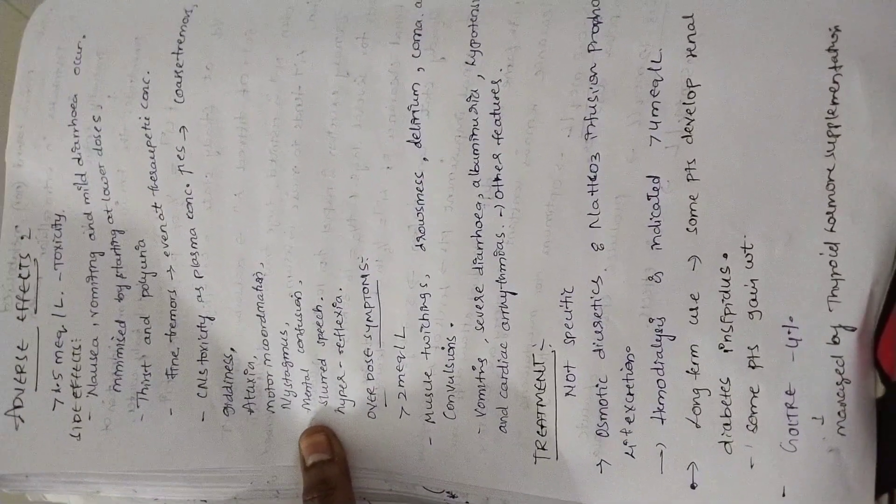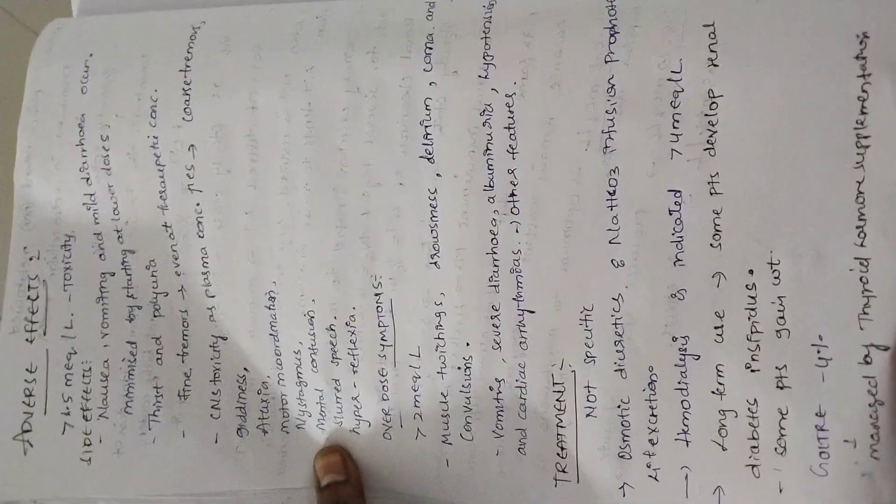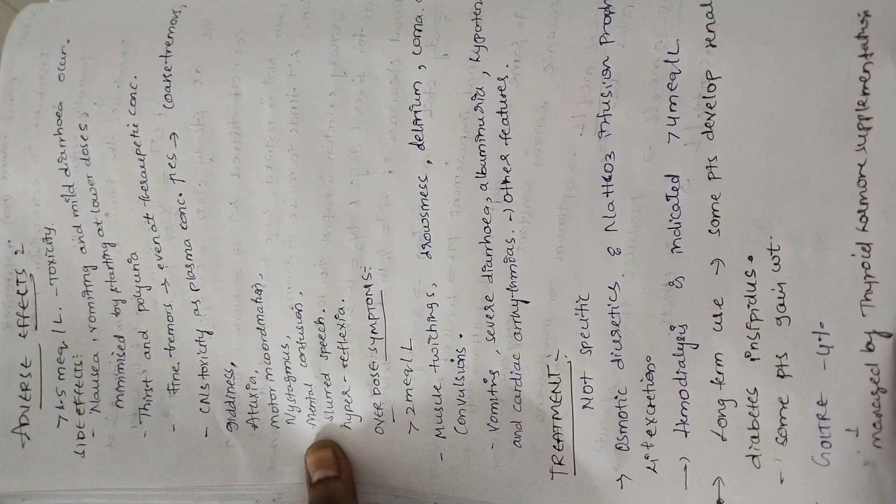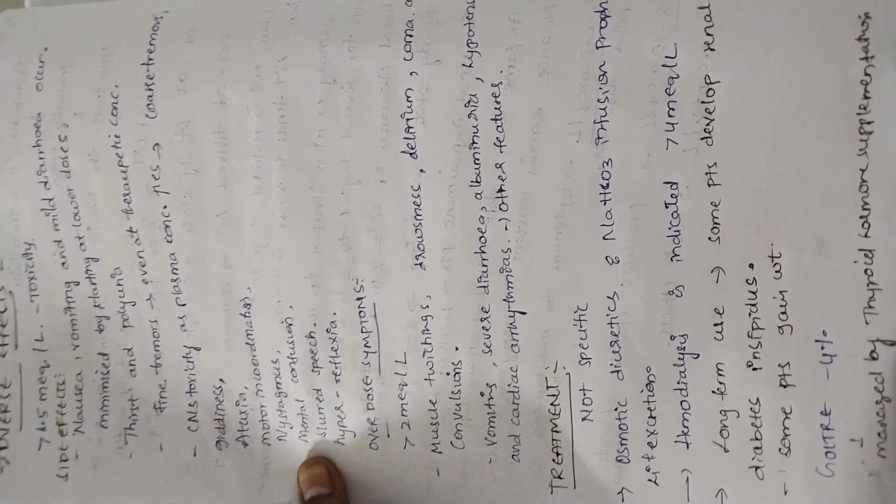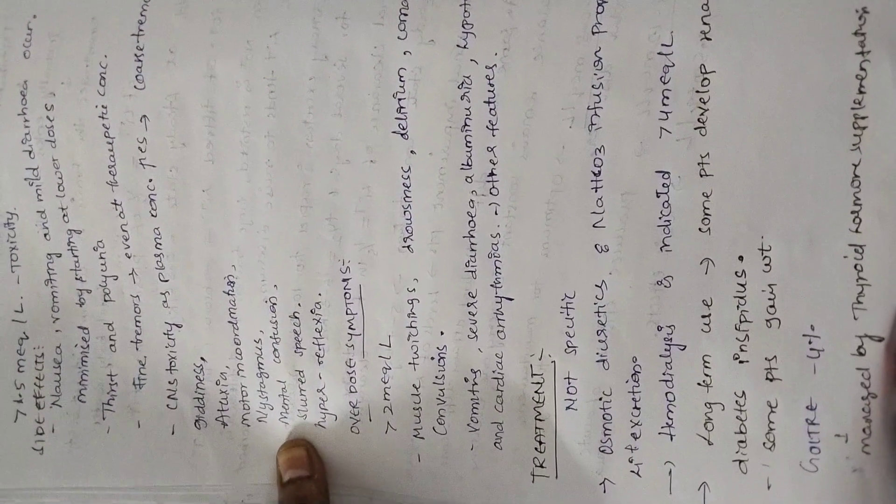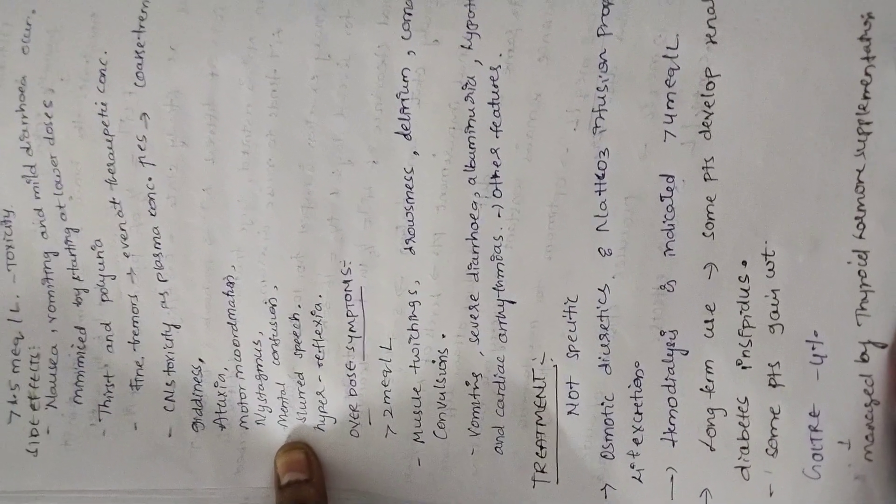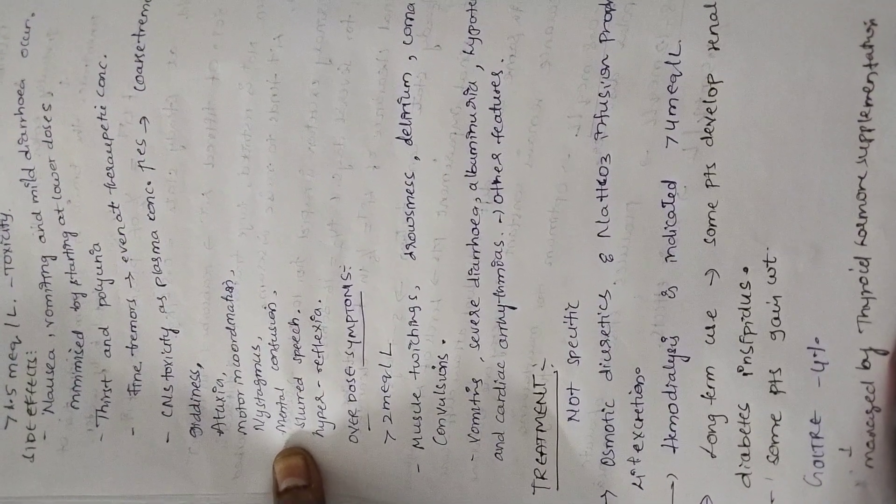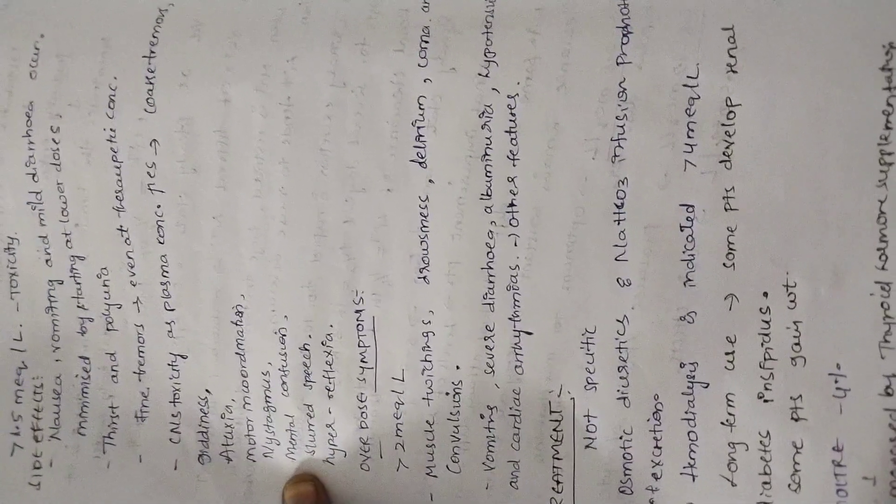What are the adverse effects of lithium? If greater than 1.5 mEq per liter is given, it will lead to toxicity. Nausea, vomiting, mild diarrhea may occur, minimized by starting at lower dose. We should not start lithium directly at 0.8 mEq per liter. We should start it slowly to avoid side effects. Thirst and polyuria will occur due to diabetes insipidus. As more amount of water is passed in the urine, more thirst will be experienced. Fine tremors will occur at therapeutic concentration, 0.5 to 0.8 mEq per liter.